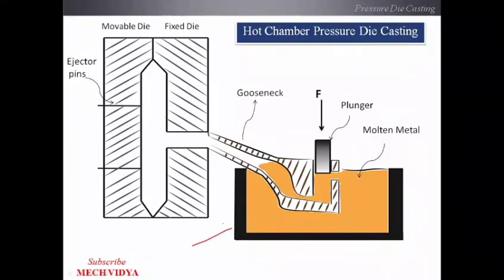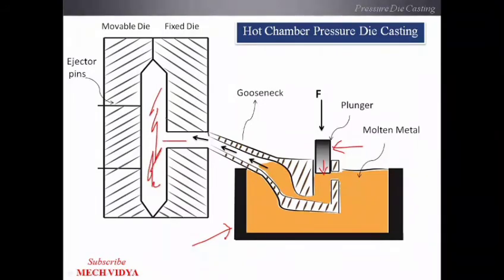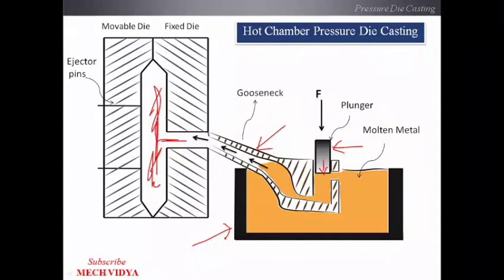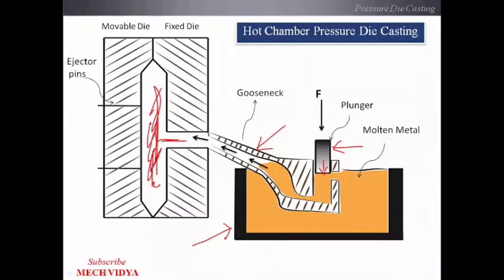In hot chamber pressure die casting, the setup is different. The main component is the furnace, which is an integral part of the setup — it is in this furnace that we melt the solid metal. Once melted, a force is applied to the plunger, and the molten metal flows along the direction shown by the arrows and fills the mold cavity. One important part here is the gooseneck pipe — it is called a gooseneck because it resembles the neck of a goose, a bird with a long neck. Once the molten metal fills the entire cavity, we wait for solidification, remove the ejector pins, and get the final casting.